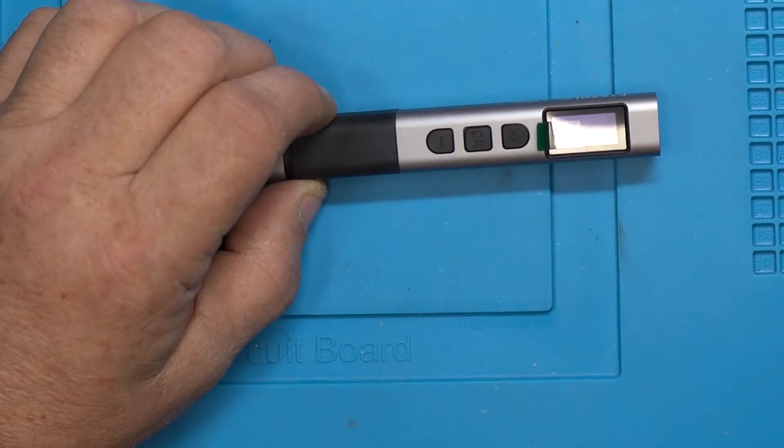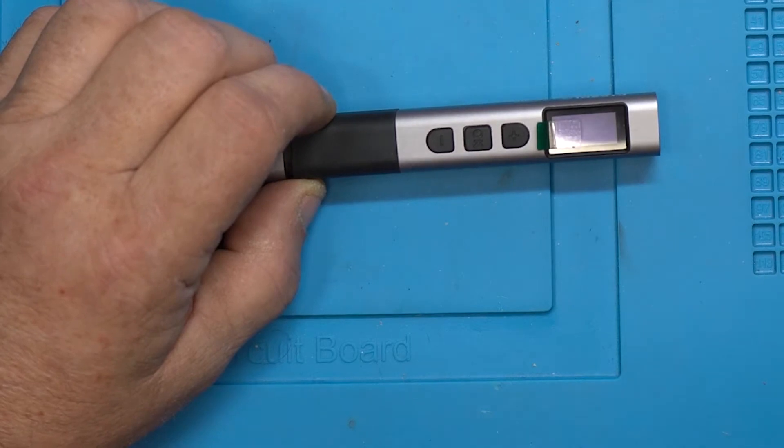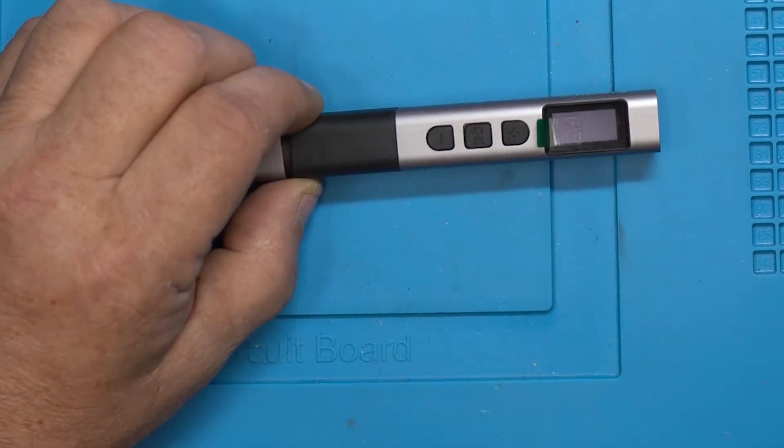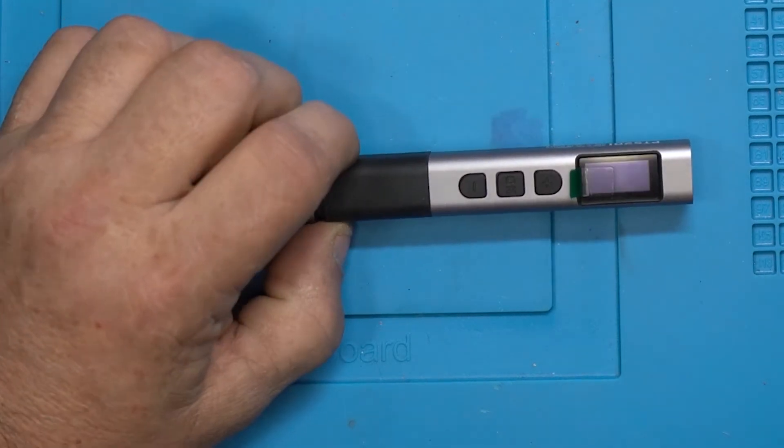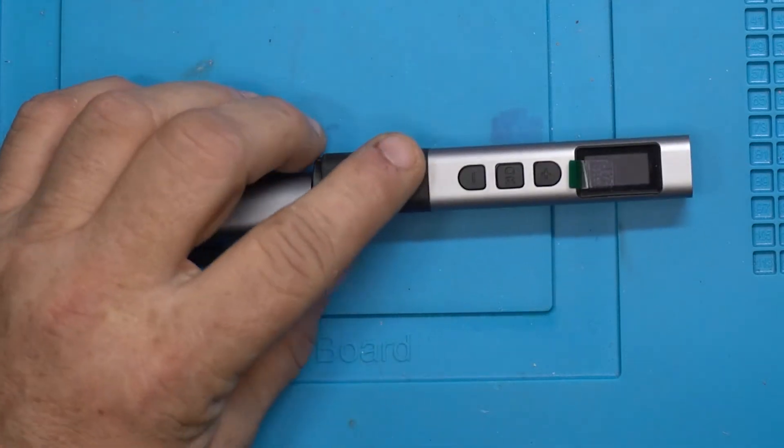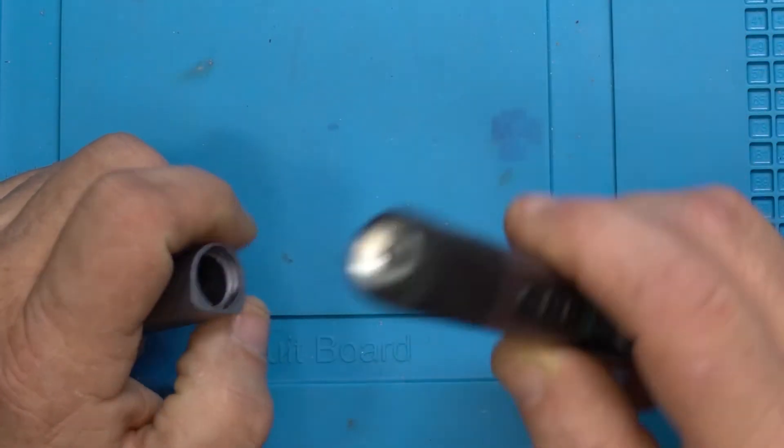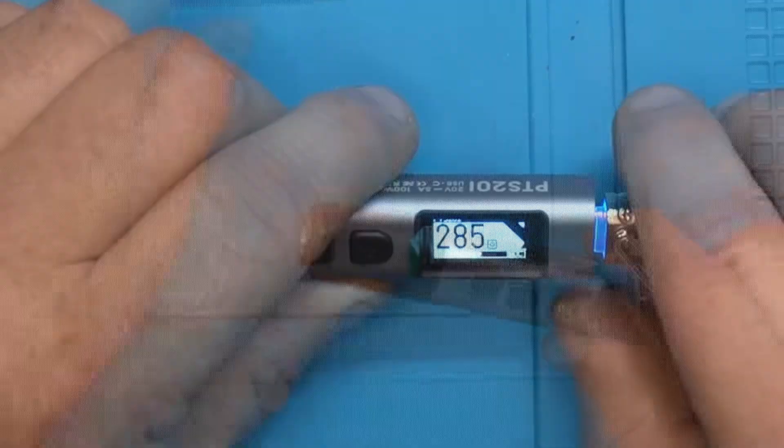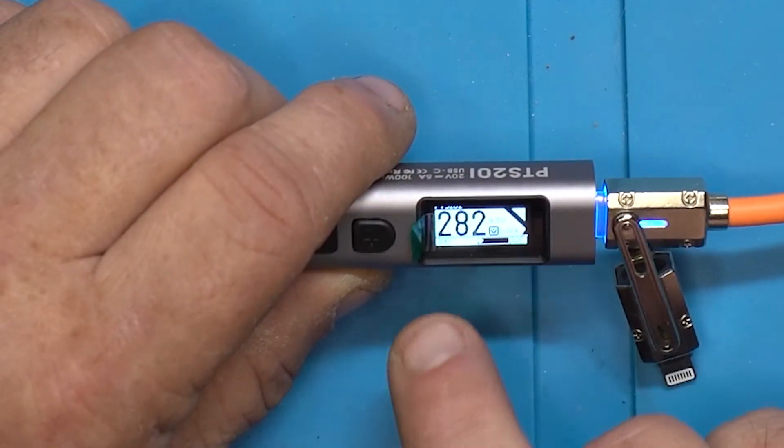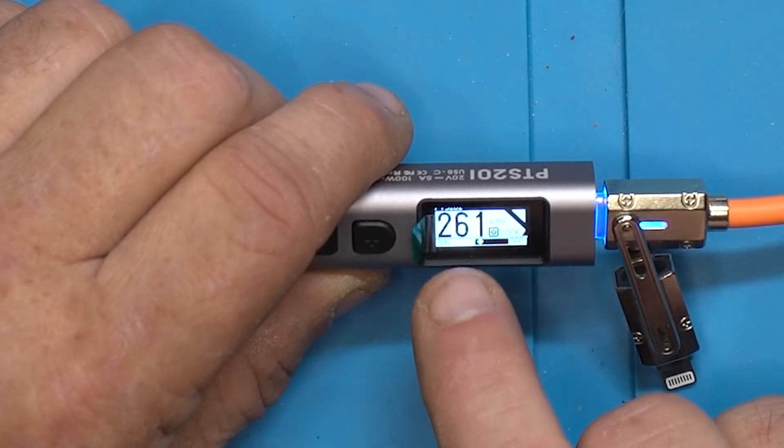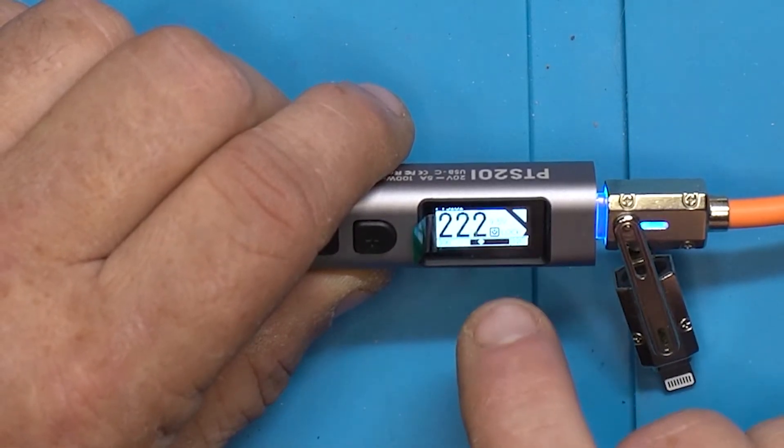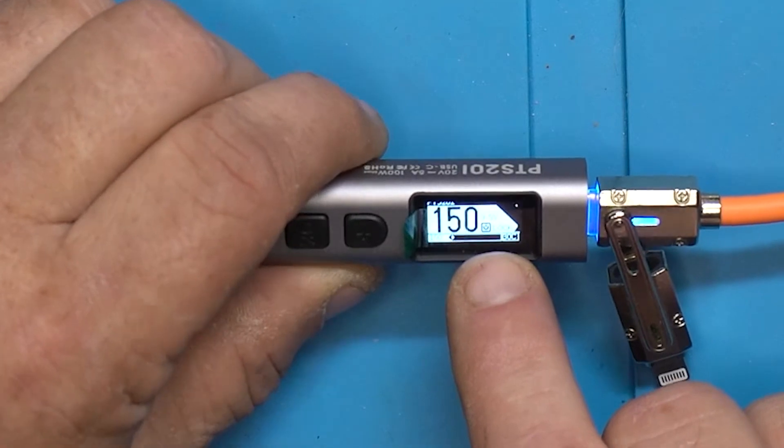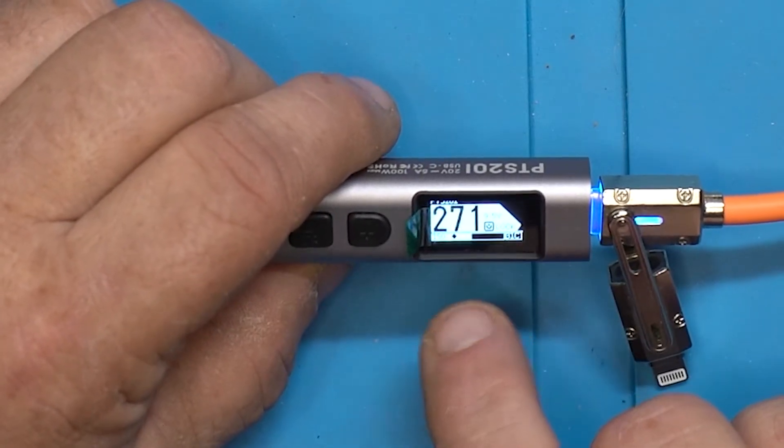We're looking at the Pine Seal version 2 TS-101 tips, and I'm also going to check something else we may have in the mix that we can use with the iron later in the video. The display shows the model PTS-201, the temperature, the voltage, and it's locked so you can't turn it on because it has no tip.